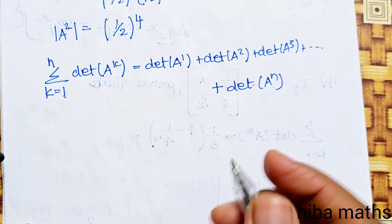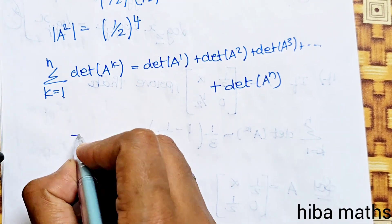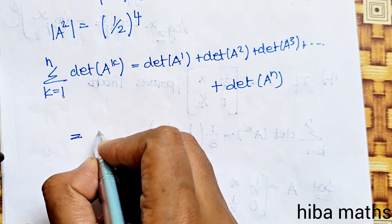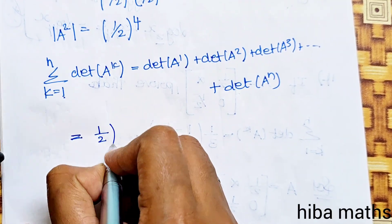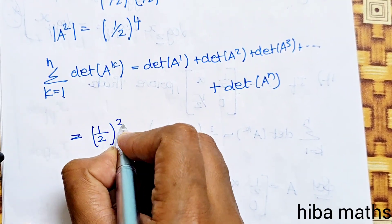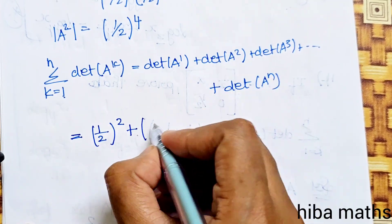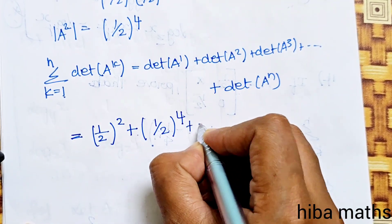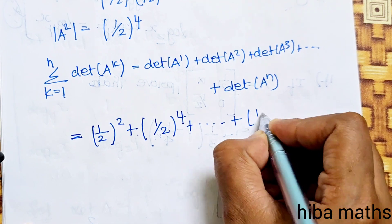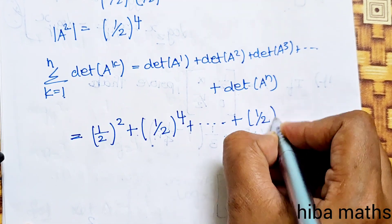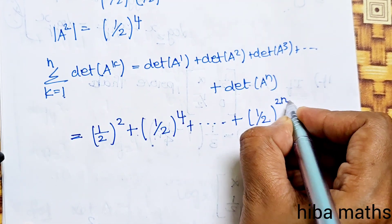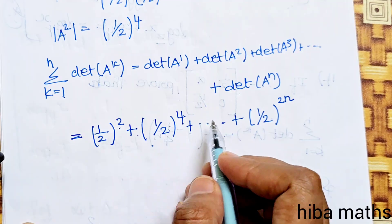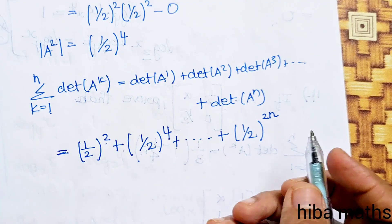Now we need to add all these determinant values. Determinant of A^1 = (1/2)² = 1/4. Determinant of A² = (1/2)^4 = 1/16. This continues up to (1/2)^(2n). The exponents are 2, 4, 6, ..., 2n — a multiple of 2 each time.